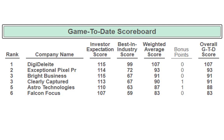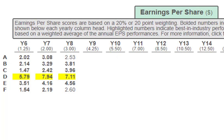Let's look at earnings per share, return on equity, and stock price. For earnings per share, we now have two companies that did not meet expectations: company A and company F. Company A dropped from 3.08 to 2.53. Company F went from 2.19 to 2.60 — you might think they increased, and they did, but investor expectations also increased, which is why they did not meet expectations for year 8. Company D is best in industry at 7.11, and companies B, C, and E are meeting expectations.